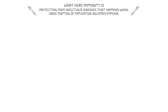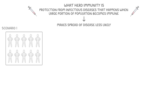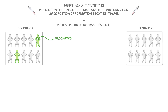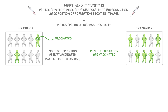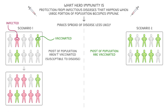This herd immunity typically happens through vaccination programmes and this makes the spread of that disease less likely. To see how exactly this works, let's say we have two scenarios. In scenario one, only a few individuals in the population are vaccinated, but in scenario two, most of the population is vaccinated. In scenario one, because most of the population aren't vaccinated, this makes them susceptible to the disease. This means even if only a few individuals are infected initially, they can spread it to many other individuals quickly, so a large portion of the population ends up being infected overall.